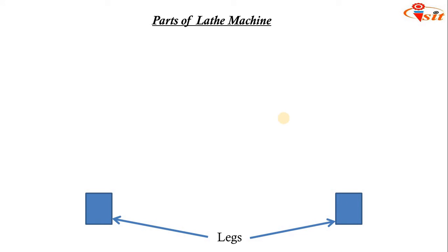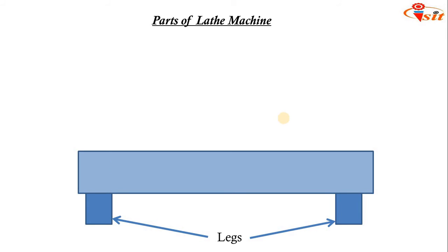The first part is the legs — on these legs the bed is kept. The bed is the base of the machine. The bed material should have high compressive strength, should be wear-resistant, and should absorb vibration. Whenever we are doing operations on the lathe machine, the vibrations generated will affect the surface finish of the work piece and also the tool life. To overcome this, the vibrations must be absorbed by the bed. We use cast iron alloy with nickel and chromium as the bed material.